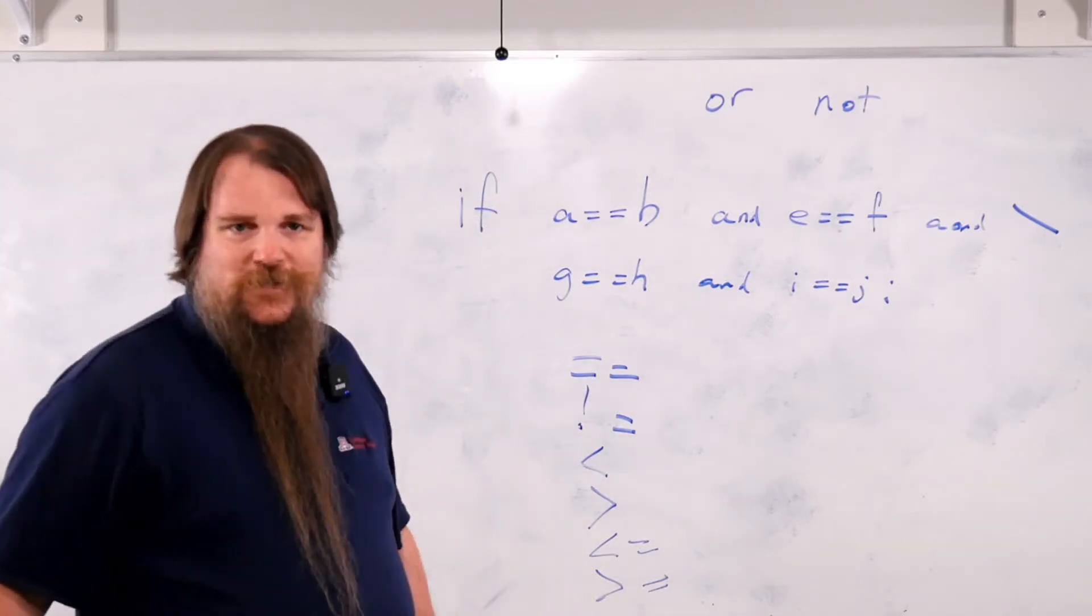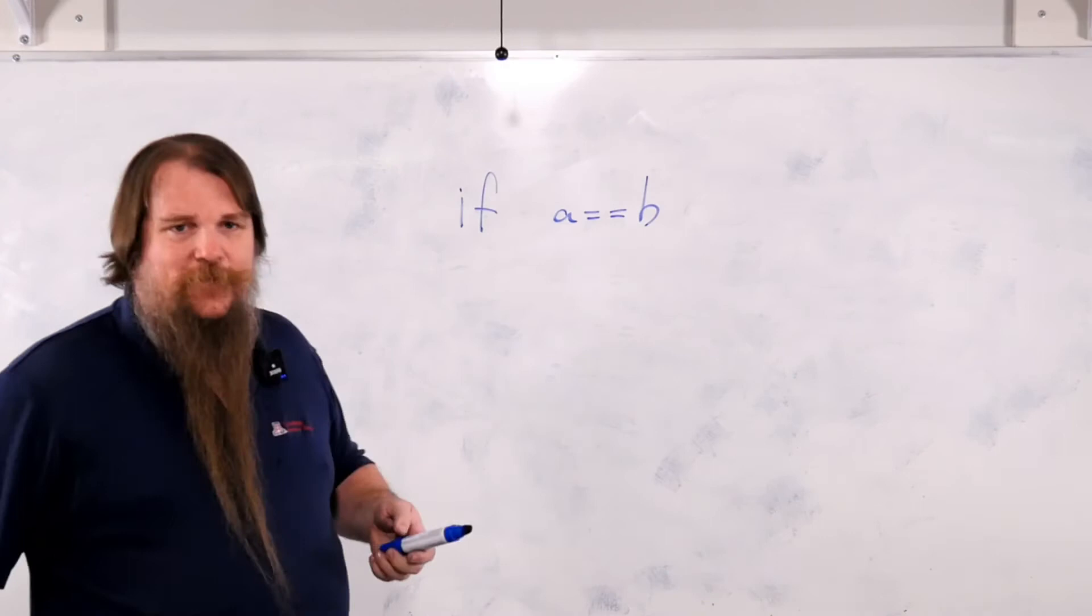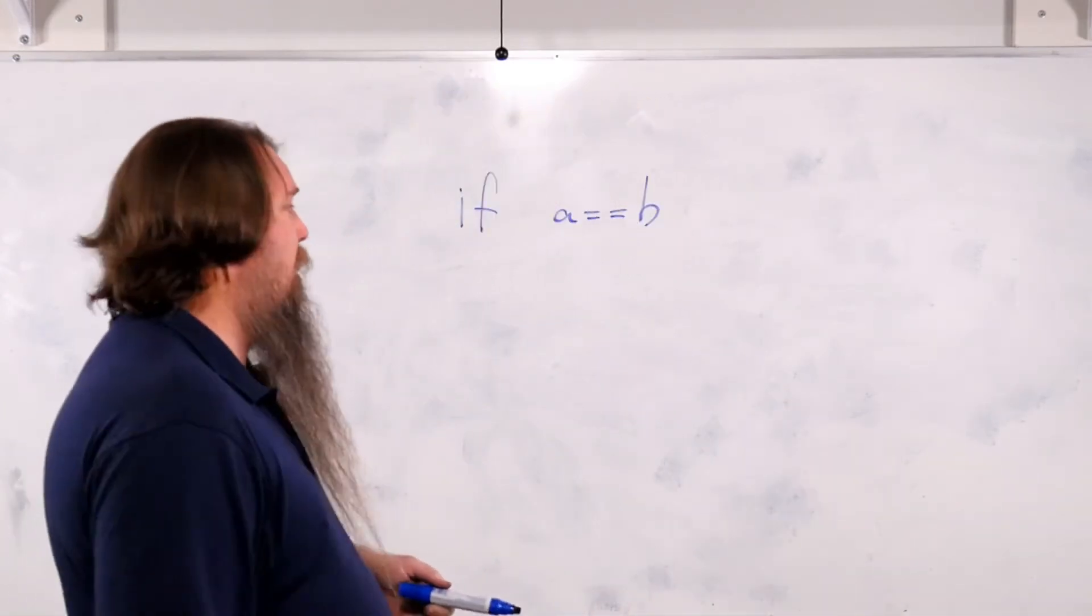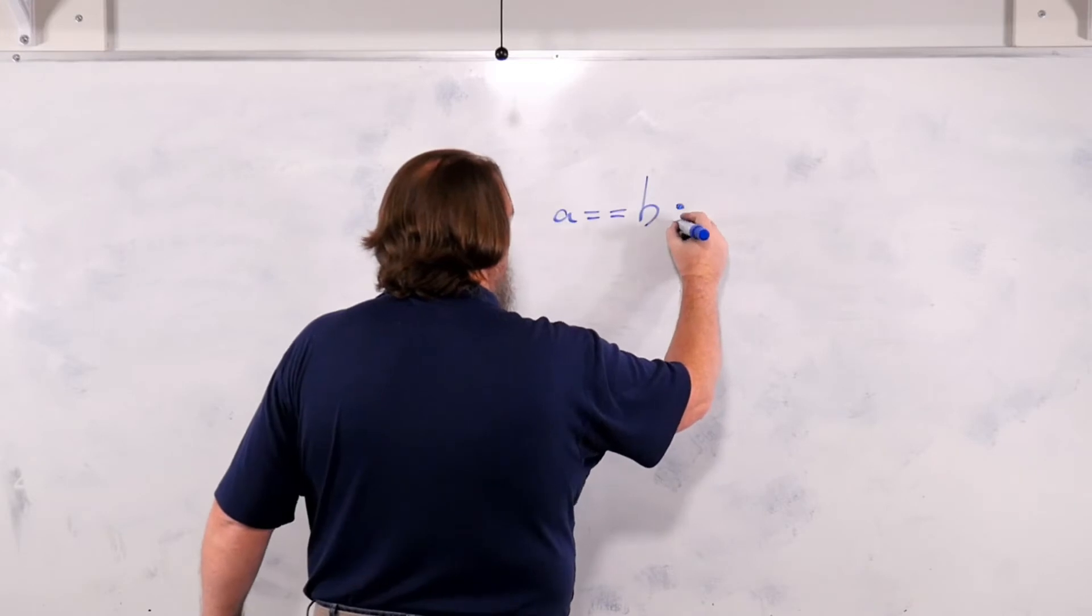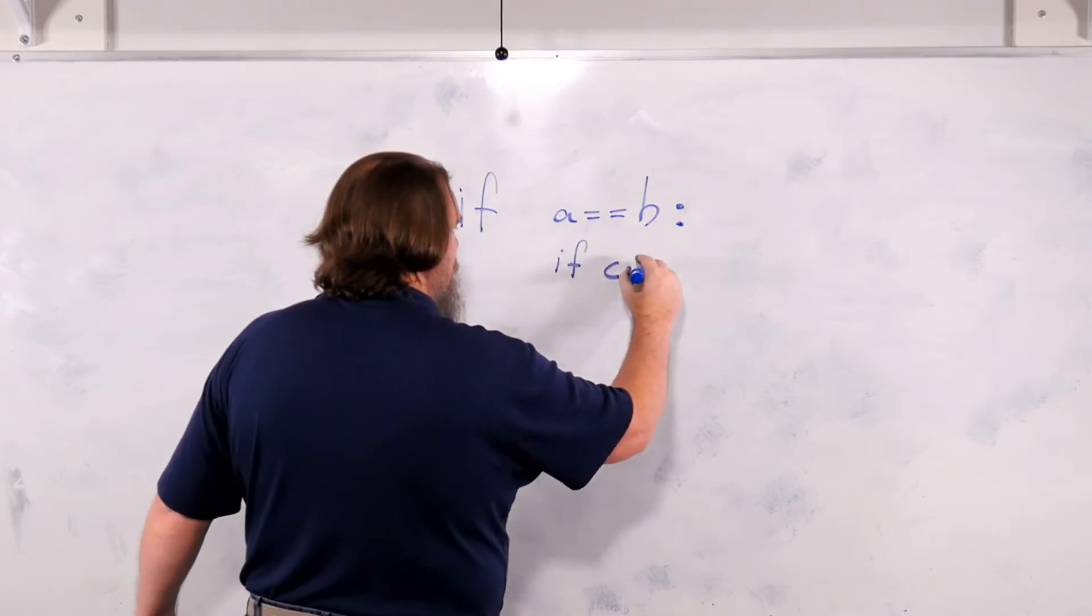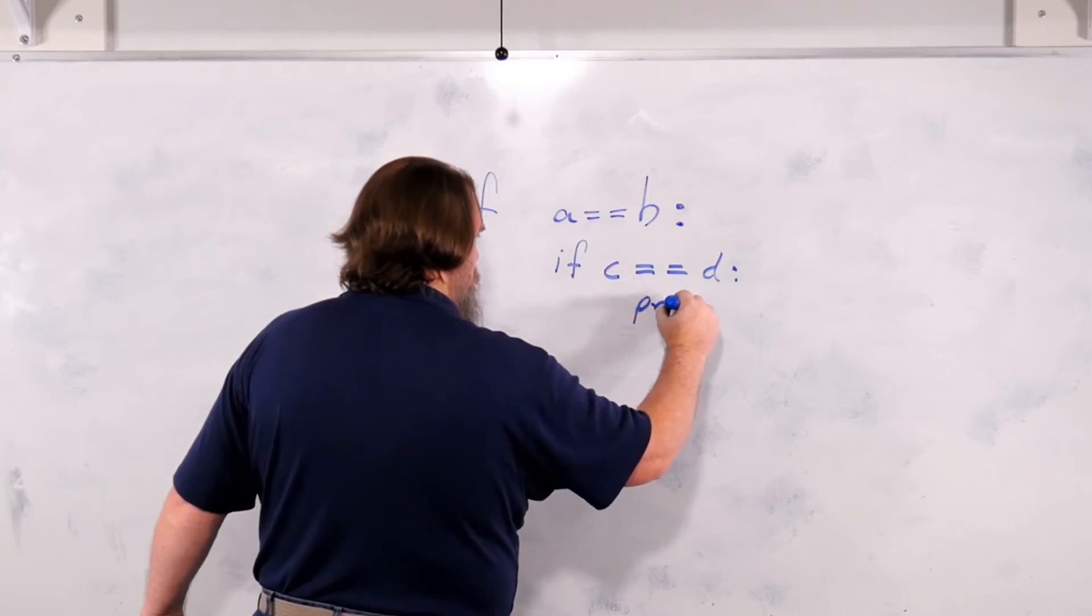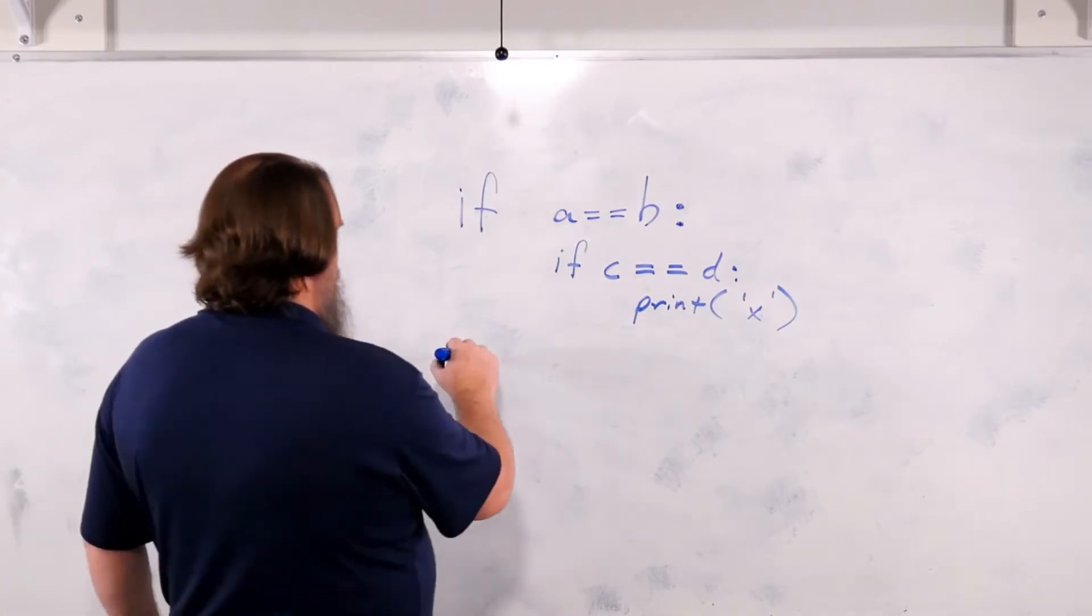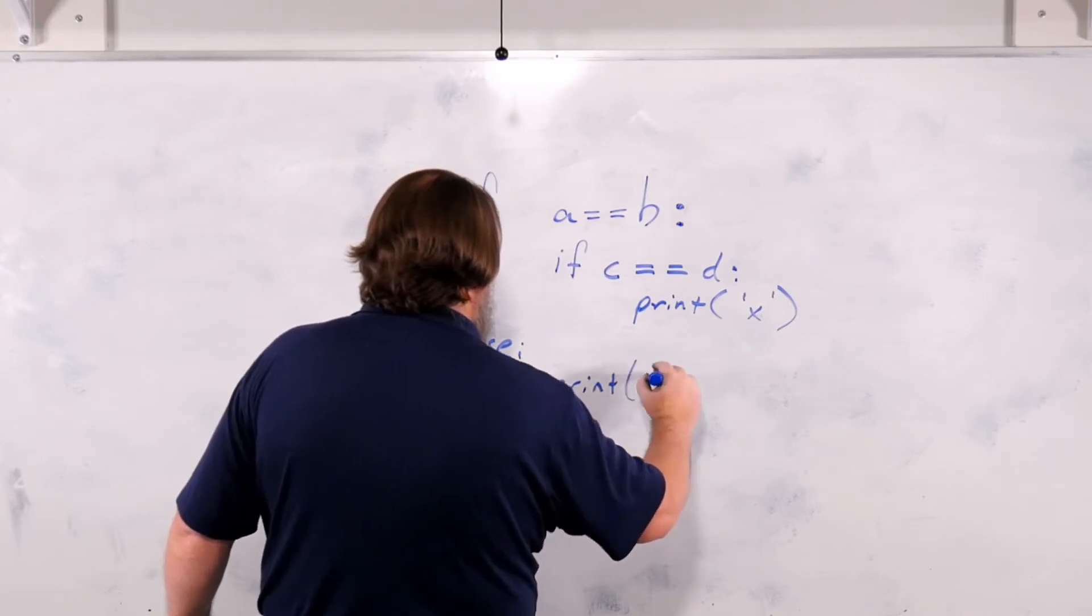And it pretty much works like any other language that you've seen before. Let's do a nested if. So nested if is a good chance to look at how Python uses indentation to track the blocks you're in. So let's say if a equals b, and then we'll have inside of it, if c equals d, print an x. And now we'll have else print y.